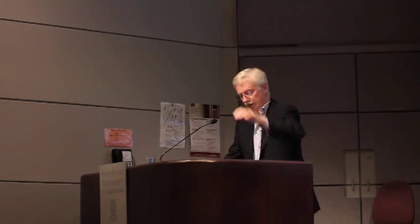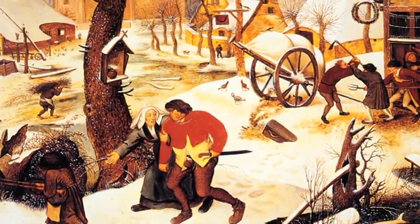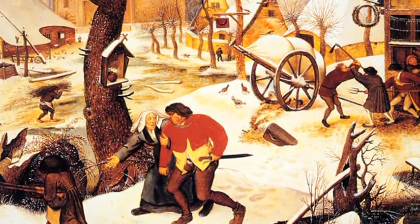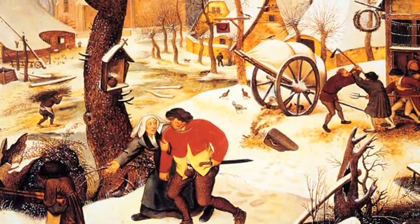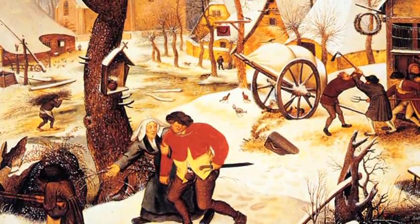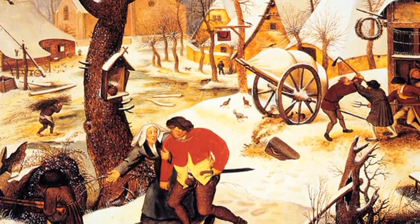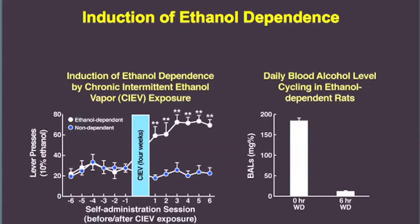Let me give you a quick example. This is a Peter the Younger's copy of a Peter the Older — a Bruegel — showing that even in the Middle Ages, the debauchery associated with alcoholism was recognized. So, without getting into a lot of detail, I showed you that I could get rats to drink alcohol, but how do I get rats that are alcoholics? How do I make rats dependent? There's a whole series of things we do, but first we train them to drink alcohol — that's the left-hand side of the left-hand panel.